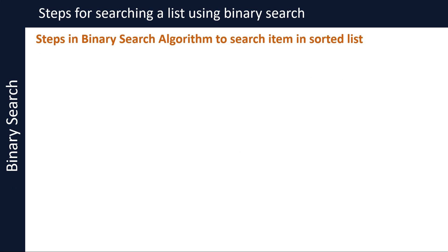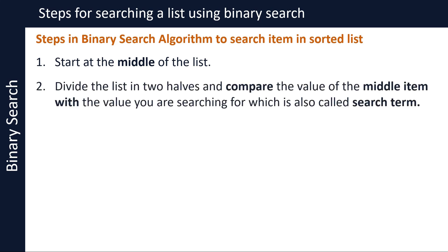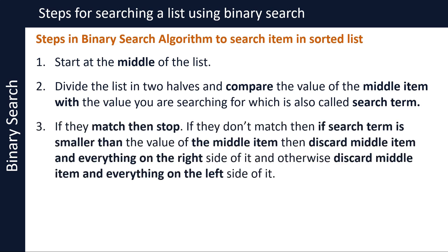Let's look at the binary search algorithm. The steps in the binary search algorithm for a list sorted in ascending order are as follows: start at the middle of the list, divide the list in two halves, and compare the value of the middle item with the value you are searching for. If they match, then stop. If they don't match, then if the search term is smaller than the value of the middle item, then discard the middle item and everything on the right side of it. And if the search term is bigger than the value of the middle item, then discard the middle item and everything on the left side of it.